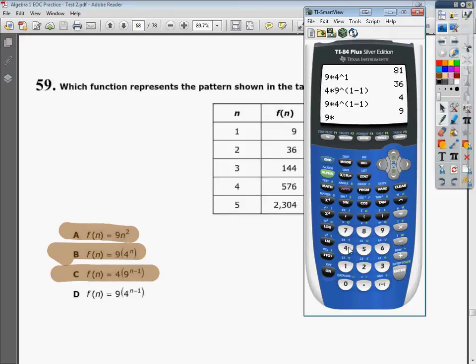9 times 4. And then I'm going to do 2 minus 1. I get 36 just like I'm supposed to. Now I'm going to try to see if, and I'm actually sort of hoping, that the third one works as well. 3 minus 1. And it does.